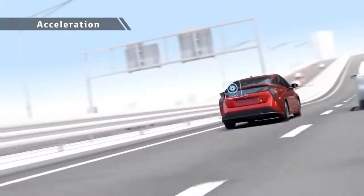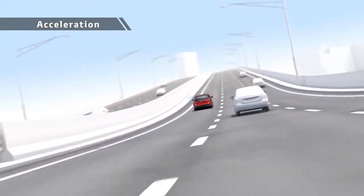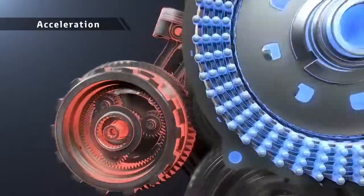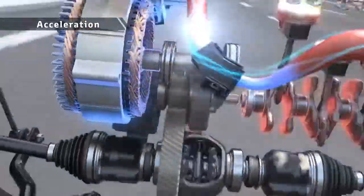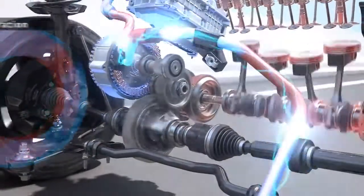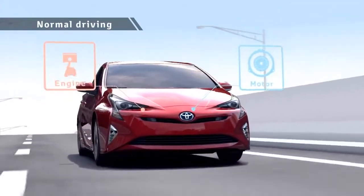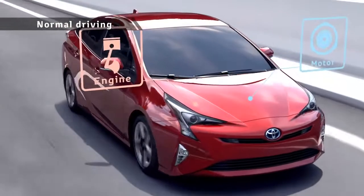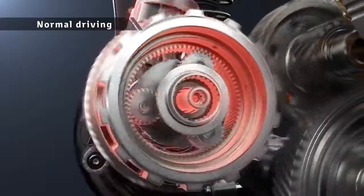During acceleration, motor drive is combined with engine drive in a rotation range with good engine efficiency to drive the vehicle powerfully yet with low fuel consumption. The engine drives the vehicle and charges the batteries at the same time to raise energy efficiency.